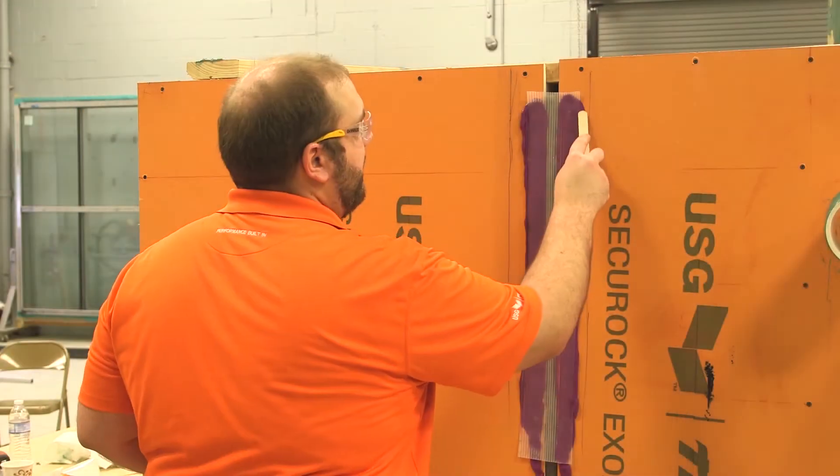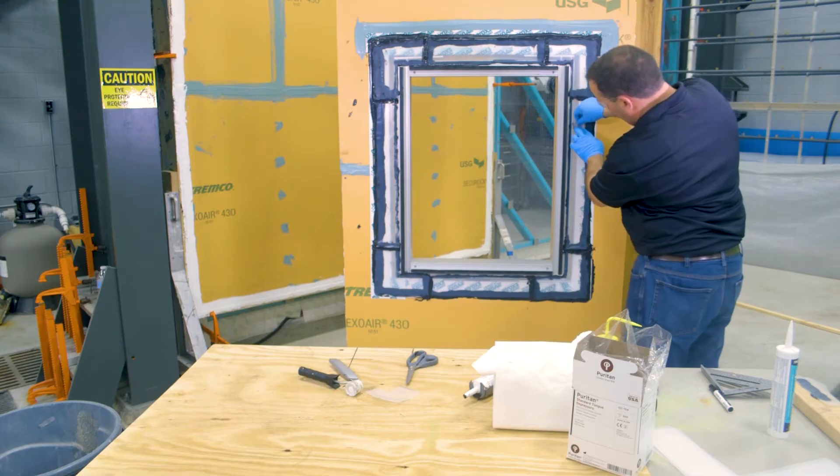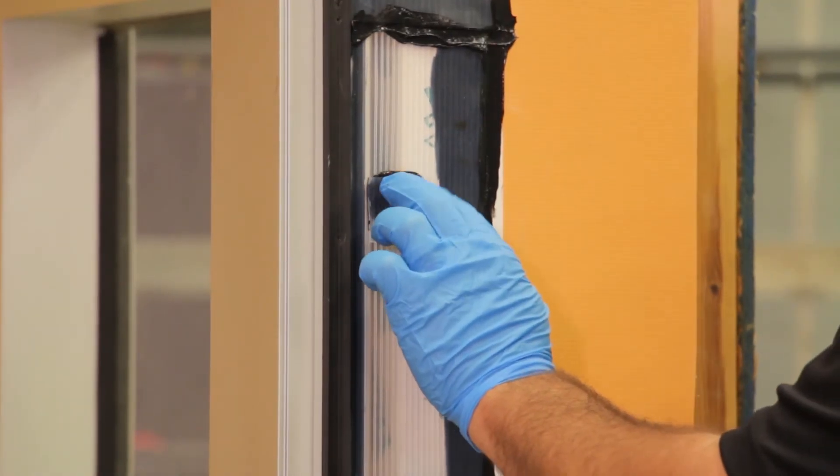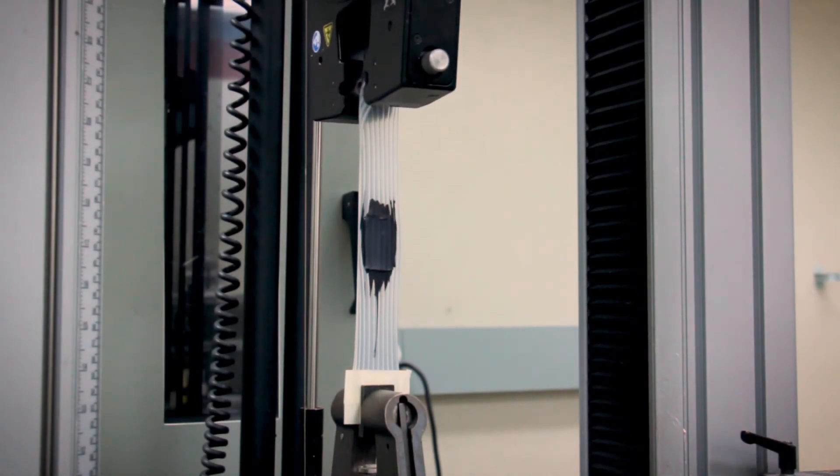If it does get cut or damaged during construction, cut out the bad area, or if it only has a puncture, cut a piece of ETA and just put a tire patch of sealant and gasket over it. And we've tested it. It still does 200% elongation over those tears.